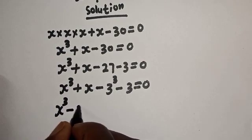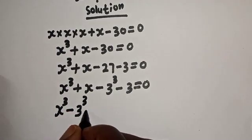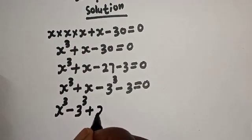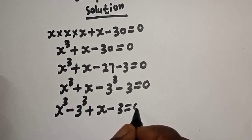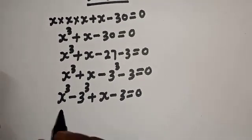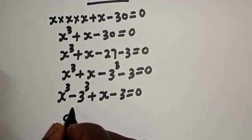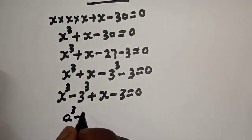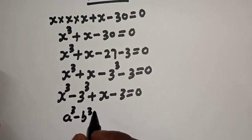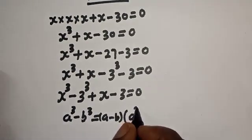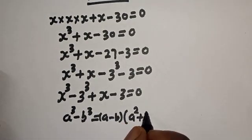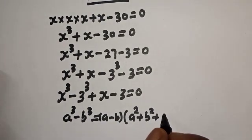Let's compare: we have s³ minus 3³ plus (s minus 3) equals zero. Take note of this rule: a³ minus b³ is equal to (a minus b)(a² + ab + b²).